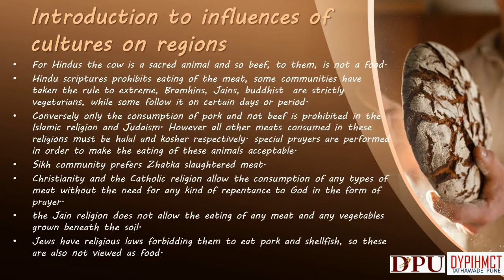Special prayers are performed in order to make the eating of these animals acceptable. The Shia community prefers Zabha-slaughtered meat. Christianity and the Catholic religion allow the consumption of any types of meat without the need for any kind of prayer. The Jain religion does not allow the eating of any meat and any vegetables grown beneath the soil. Jews have religious laws forbidding them to eat pork and shellfish, so these are also not viewed as food.